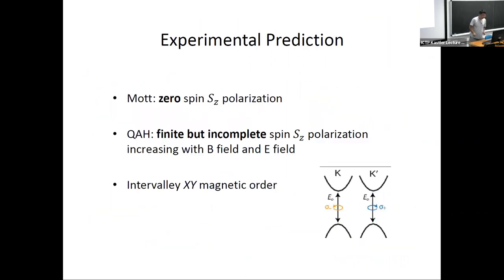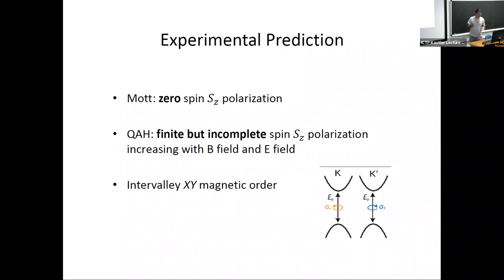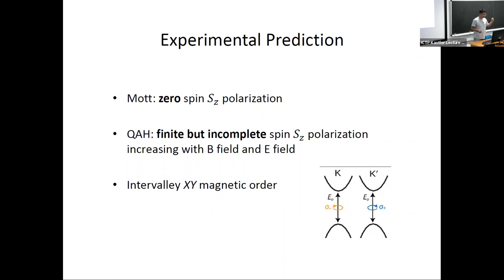In our picture we start from a 120-degree ordered AFM state, and even after band inversion the magnetic order is still primarily AFM. This can be experimentally tested: in our theory the Mott insulator state before band inversion should have zero spin polarization, so in the magnetic circular dichroism measurement you should not see any signal at zero field. In the quantum anomalous Hall state there's a finite sz polarization coming from the MoTe₂ layer, but importantly this sz polarization is far from 100 percent, especially near the transition, and it should further increase with displacement field as the system is driven deeper into the quantum anomalous Hall region.